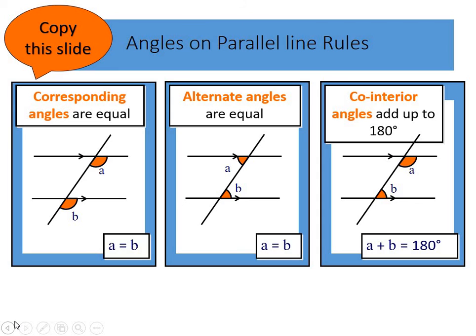There are three main rules for angles on parallel lines. As you can see, each of these diagrams are very similar. When looking at corresponding angles, you're looking for an F shape. The angle below each of the parallel lines will be the same. We call this corresponding angles are equal.